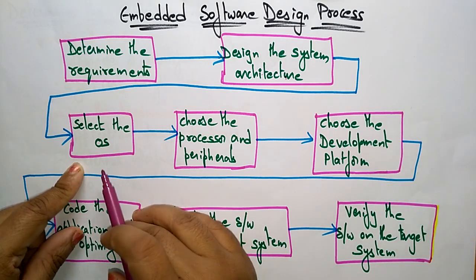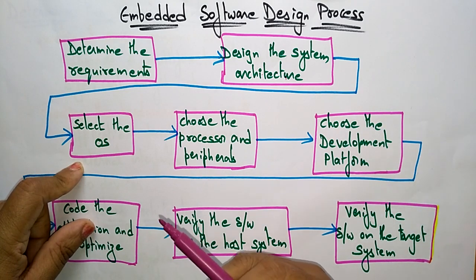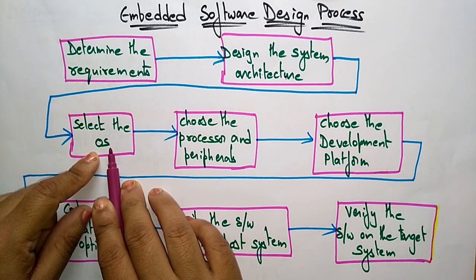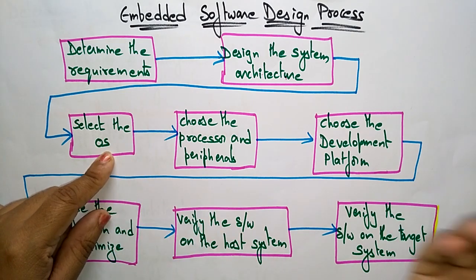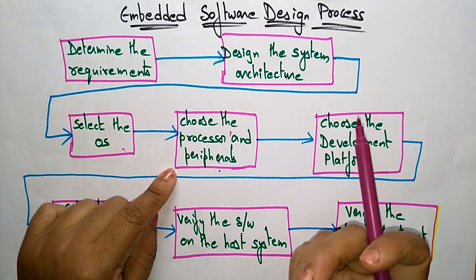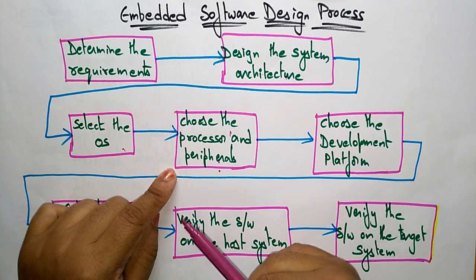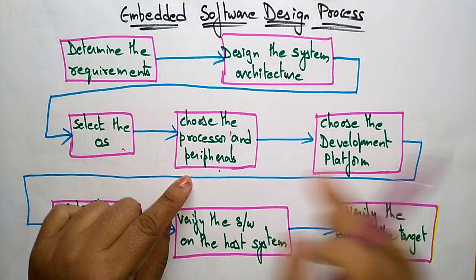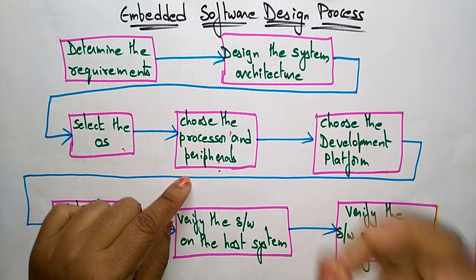Once the graphical representation is ready, the third step is to select the operating system — on which operating system you are going to design your embedded software, whether Linux, Windows, or any other. After selecting the operating system, the fourth step is to choose the processor and peripherals — what type of microcontroller you need and what type of input/output devices you need.